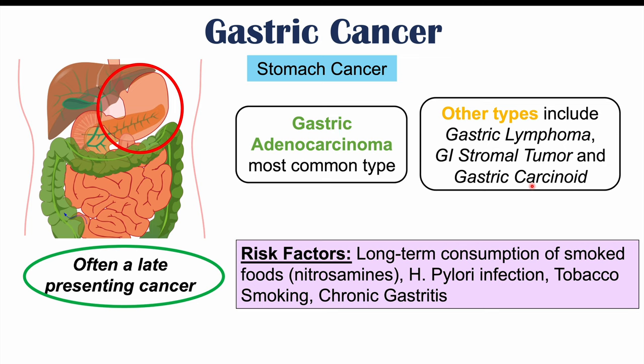The most common type is gastric adenocarcinoma. Other types include gastric lymphoma, gastrointestinal stromal tumor, and gastric carcinoid cancer. There are multiple risk factors for getting gastric cancer, each associated with a particular type. For more details, please check the full in-depth overview lesson on gastric cancer.